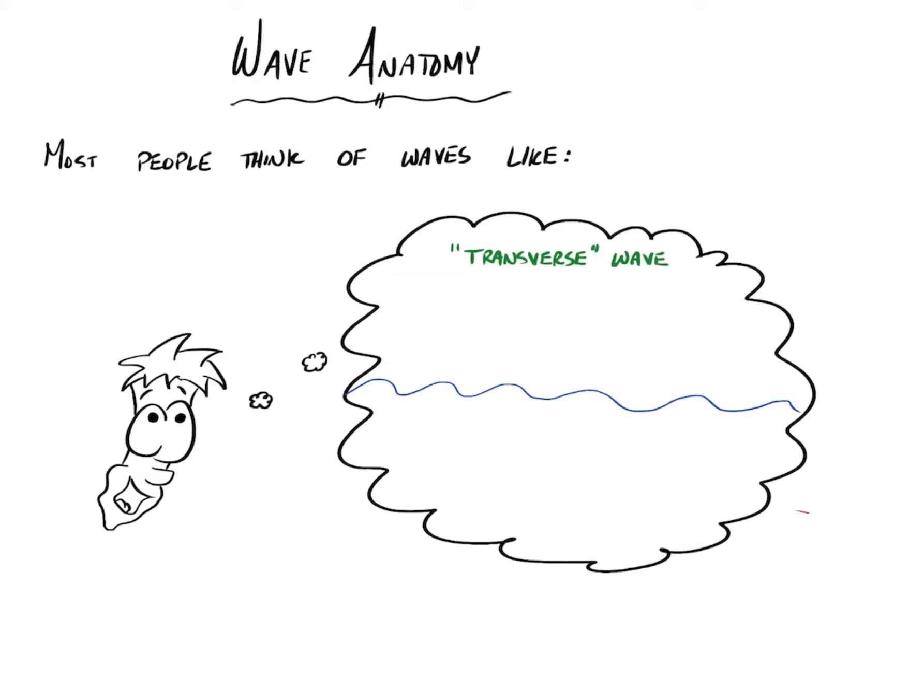So the wave that you most likely think of when you're thinking of a wave is what's known as a transverse wave, and the reason it's called a transverse wave is because we have two things going on. So let's say this wave is moving to the right, the energy is being transmitted to the right.